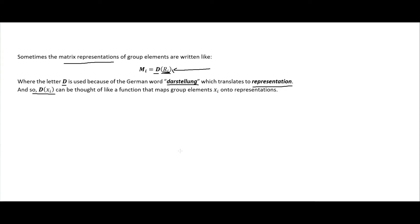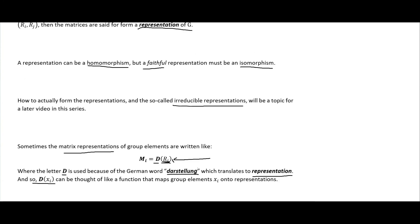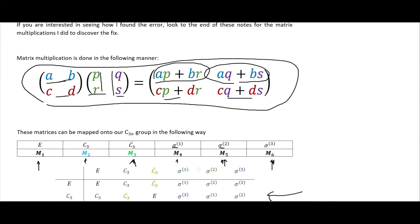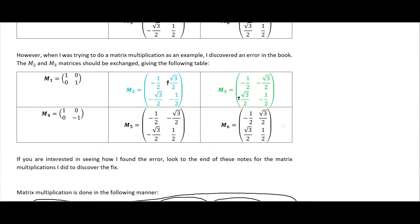Anyway, like I said, this is a very brief introduction to representation theory. I'll talk about it quite a bit more in future videos. The main takeaway here is just that we can represent our group elements as matrices where these matrices combine under matrix multiplication in such a way that they form a group that is isomorphic to our symmetry group. I will see you in the next video.